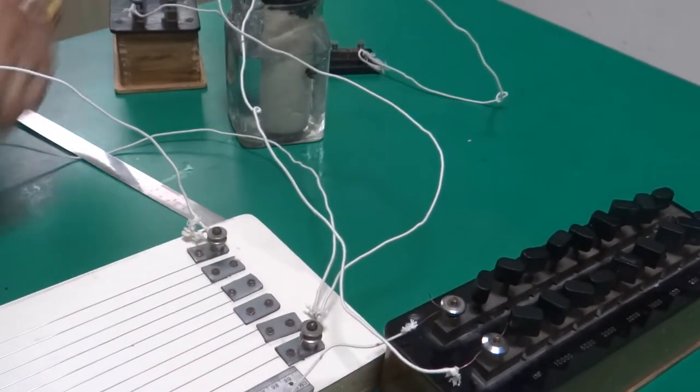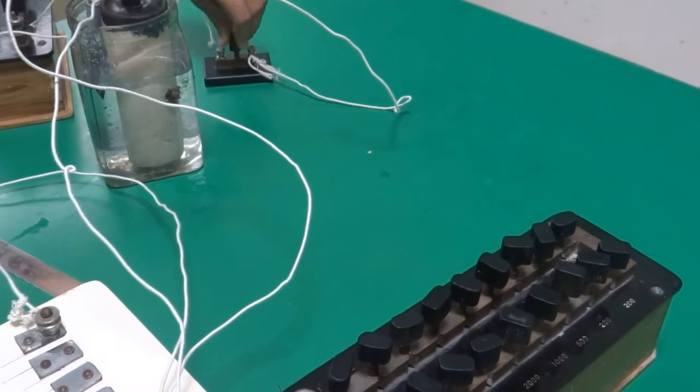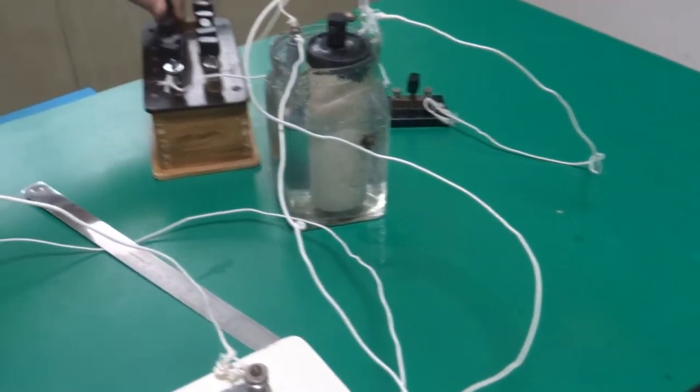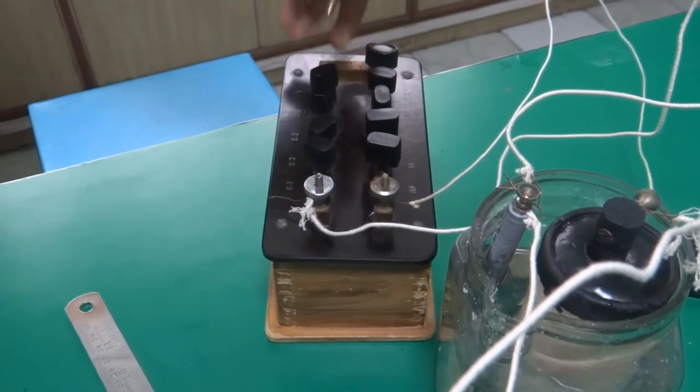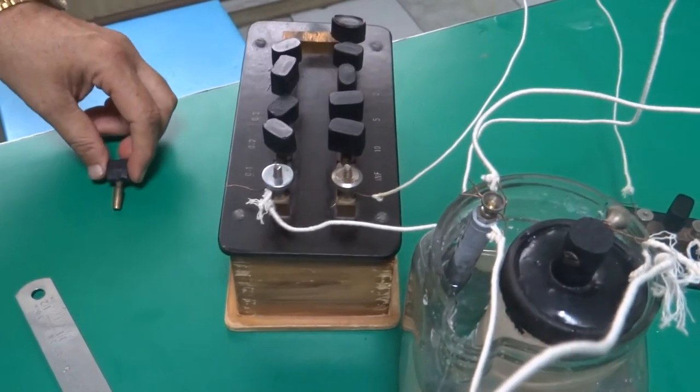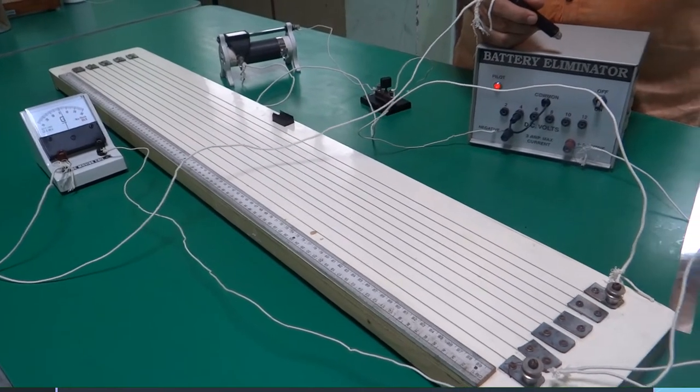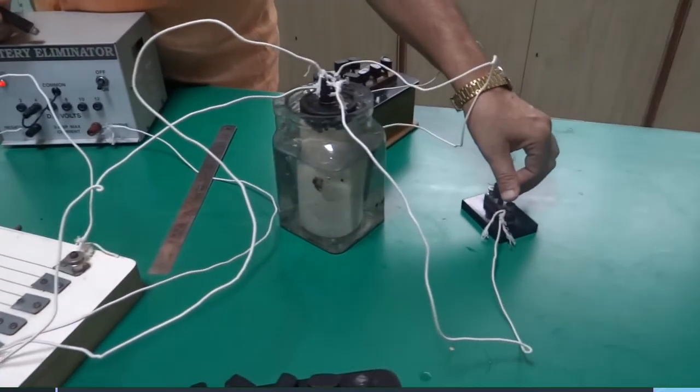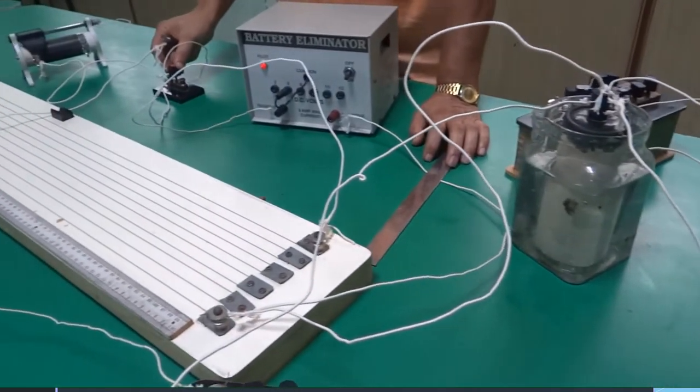Now plug in this key. Connect Leclanche cell to the circuit. Take out one resistance from the resistance box. I am taking it out. It introduces the resistance of 1 ohm. So now Leclanche cell is connected. And remember when you plug in this key, you will not remove key for the main circuit.